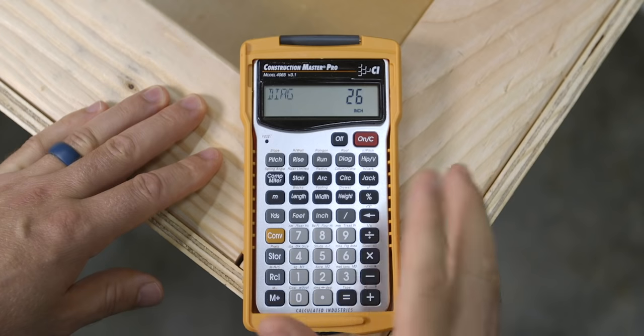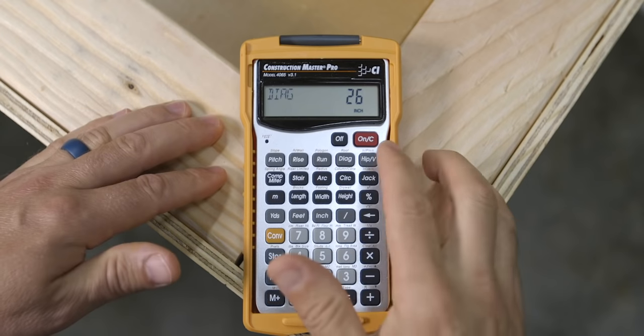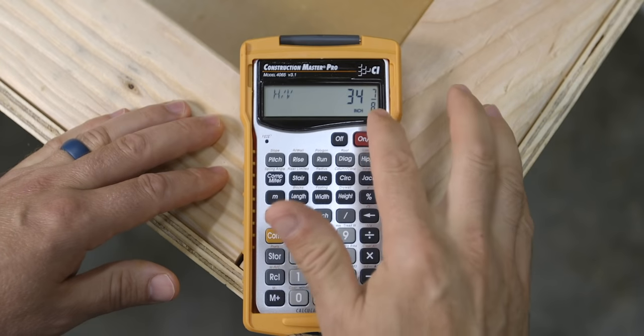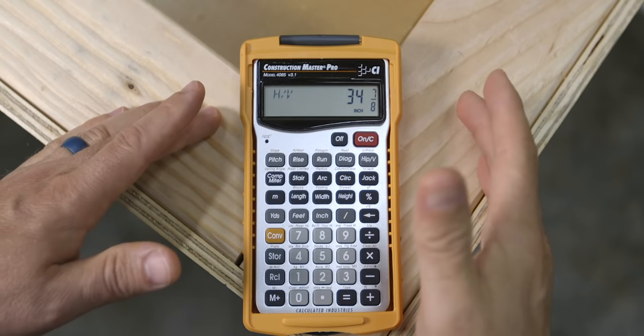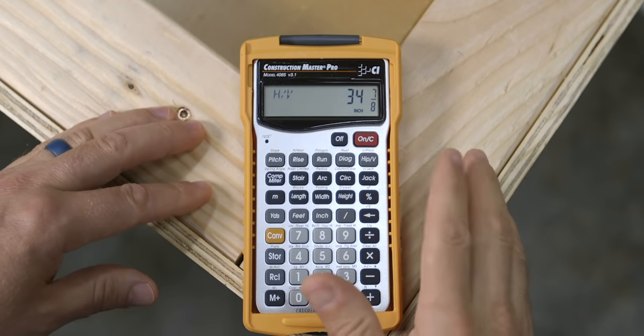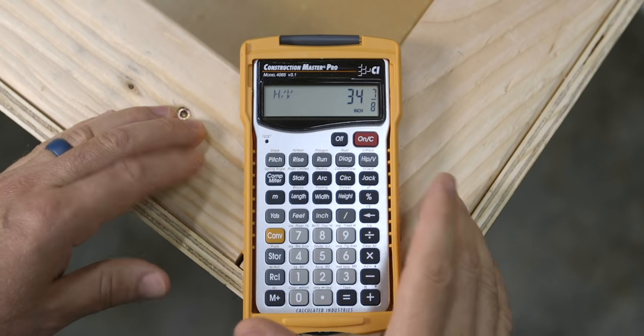From there, all you have to do to find the length of the hip rafter is to push the hip and valley button for a total length of 34 and 7 eighths. Again, this measurement does not include the overhang, so we'll need to add that just like we did for the common rafter.